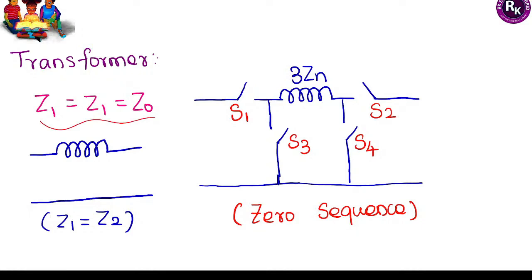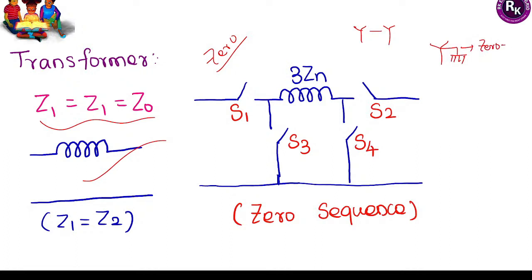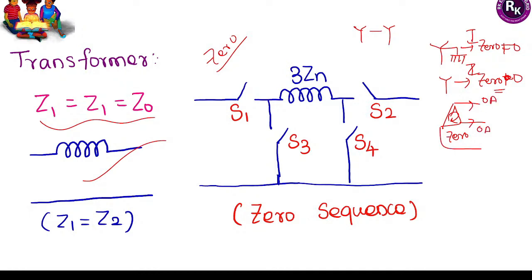For transformers: positive, negative, and zero sequence impedances are all equal. However, zero sequence network behavior depends on transformer connection type. For star connection with neutral grounded, zero sequence component exists; without neutral (isolated), zero sequence becomes zero. For delta connection, zero sequence circulates internally but does not appear in the line. Common transformer connections (star-star, star-delta, delta-delta, delta-star) each have different zero sequence network configurations.